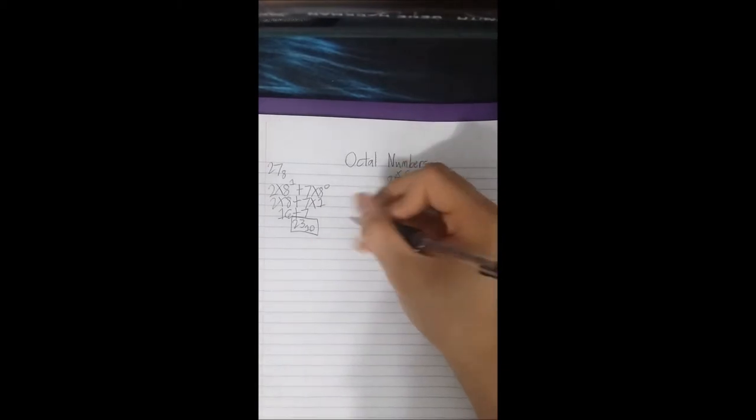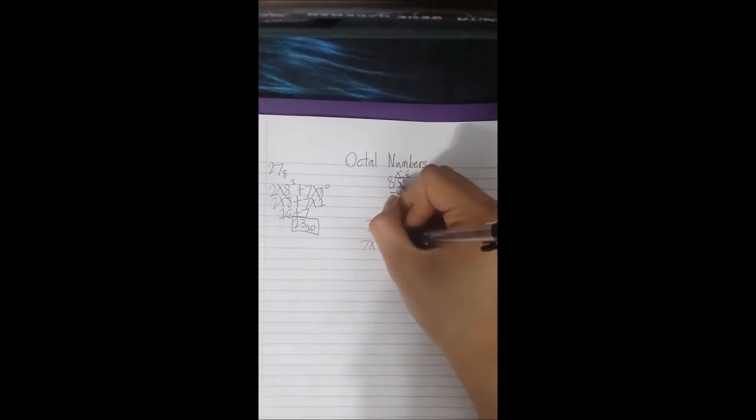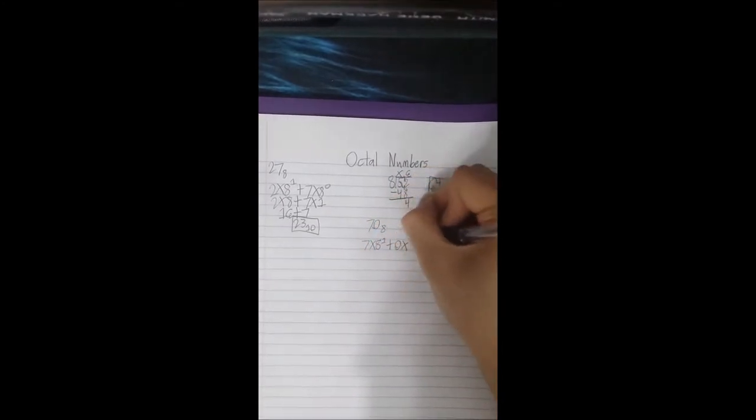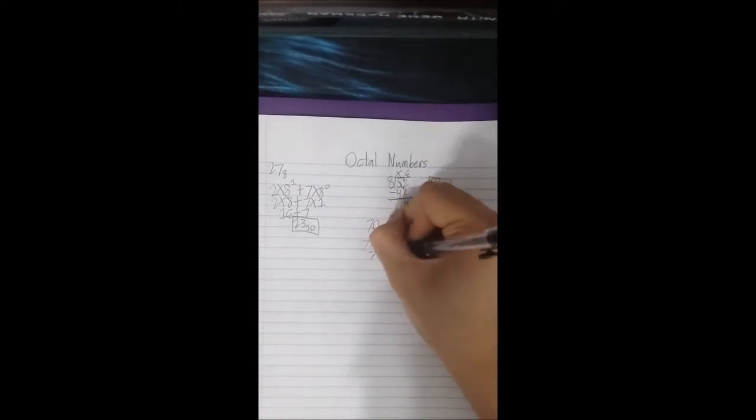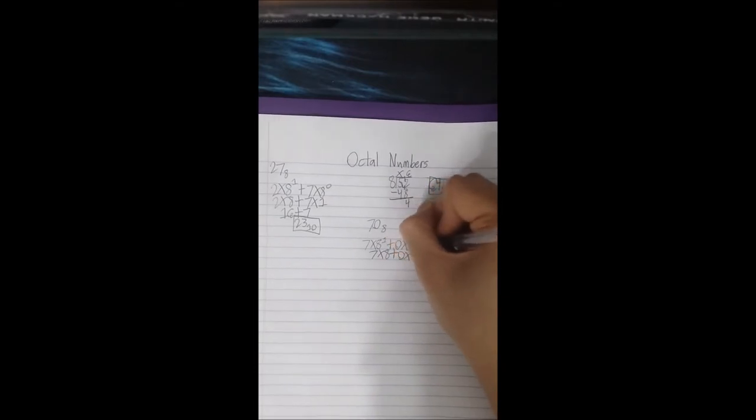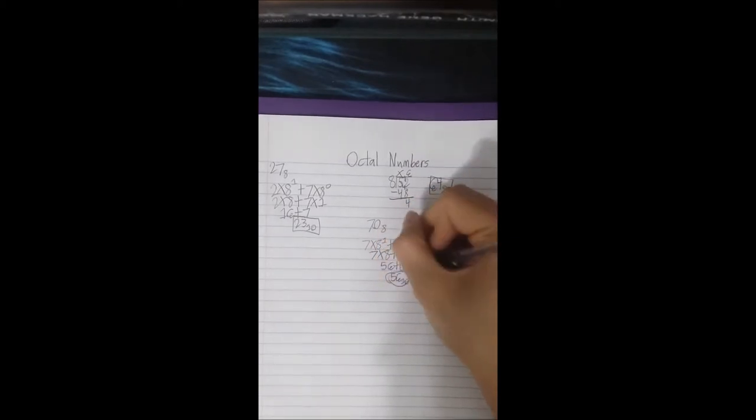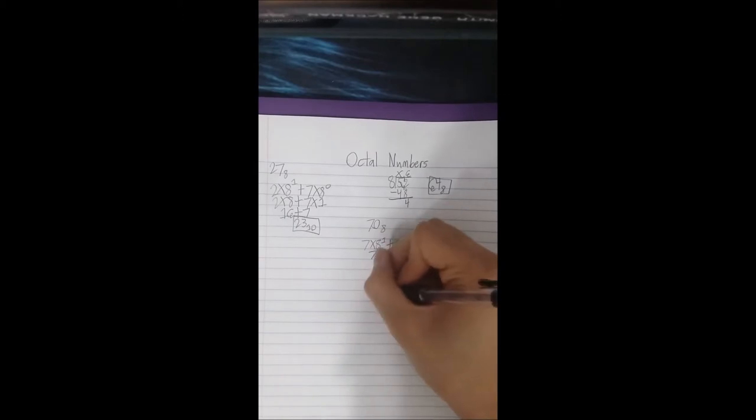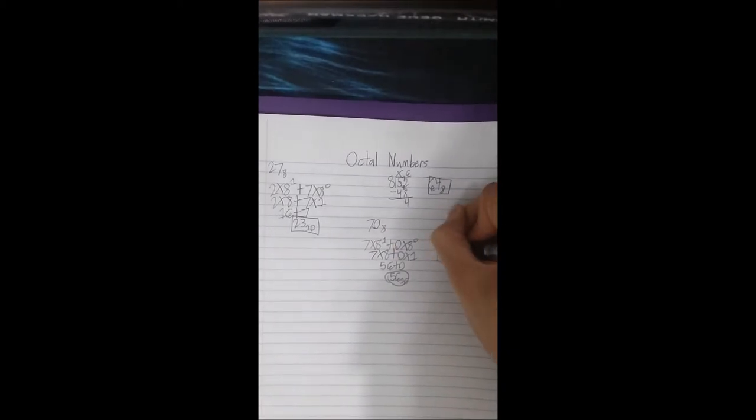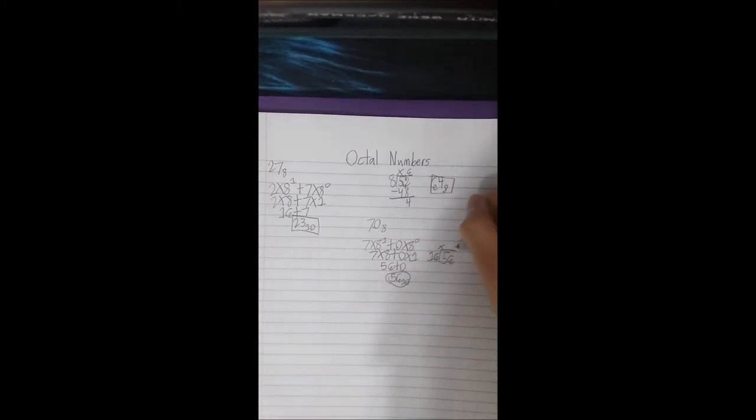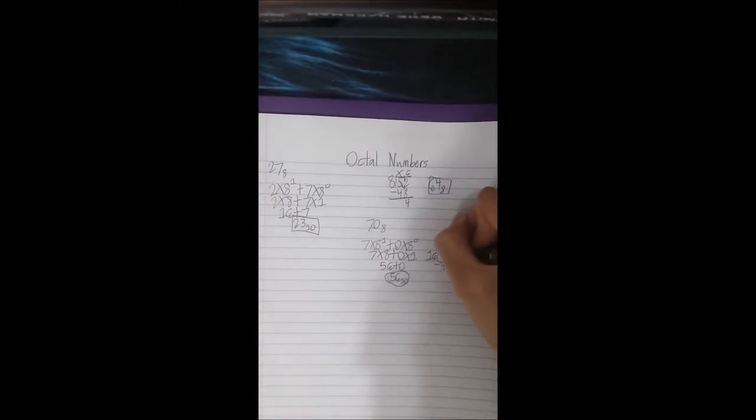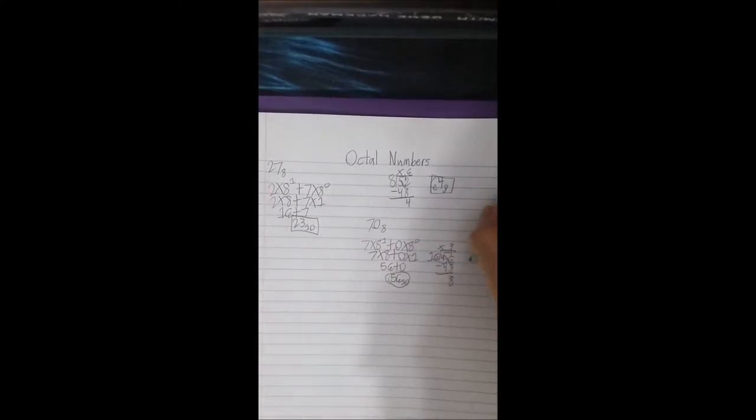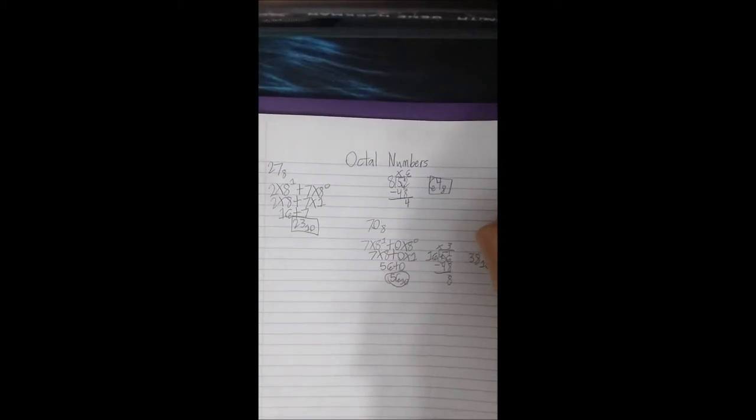The way we do this, we do the same thing as the expand strategy. So we're converting to decimal first. From there you're converting to hexadecimal. Then that's your hexadecimal.